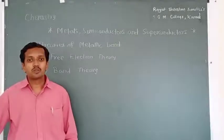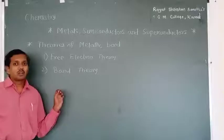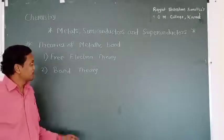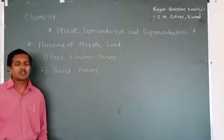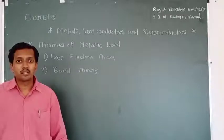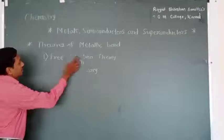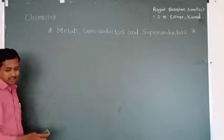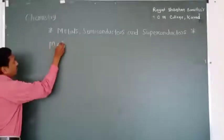Today we are going to consider the concept of metallic bond. We are going to learn how metallic bond is explained with the help of two different theories. The first theory is called free electron theory and the second theory is called band theory of metallic solids. But before discussing these two theories, it is necessary to first know the meaning of the metallic bond.